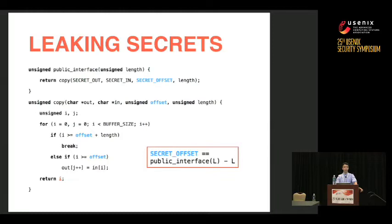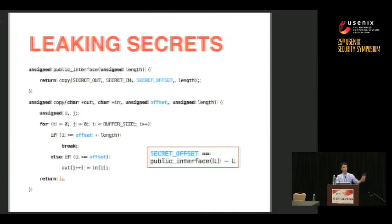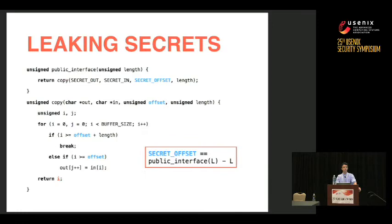This copy function iterates over the buffer indices. Although the secret offset is never directly returned, this program indirectly leaks the secret offset: an attacker who knows the source code could figure out that the return value of public interface minus the argument length he passed in reveals the secret offset. This is a reasonable assumption to make about attackers in many cases.